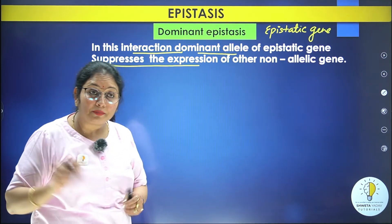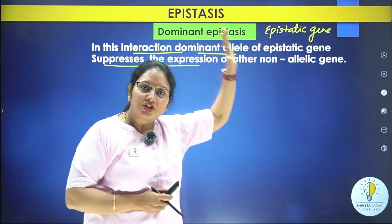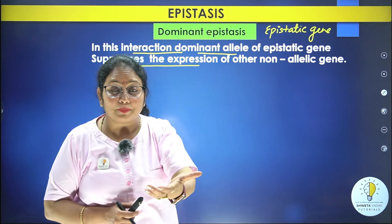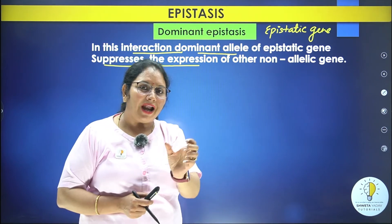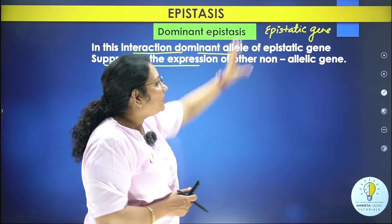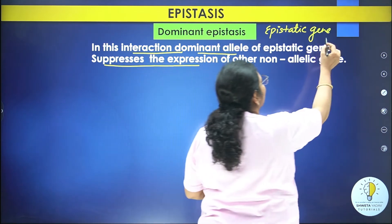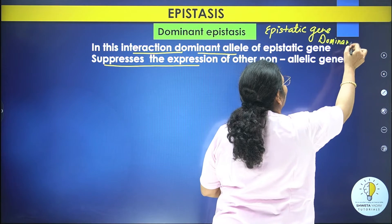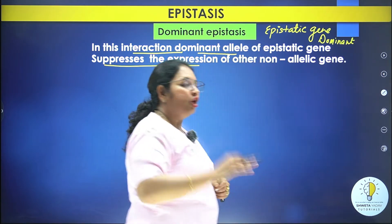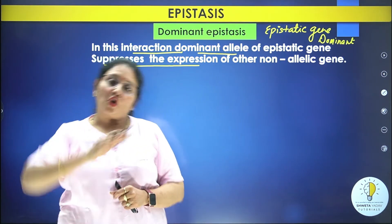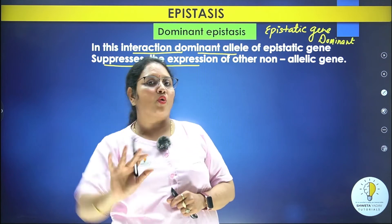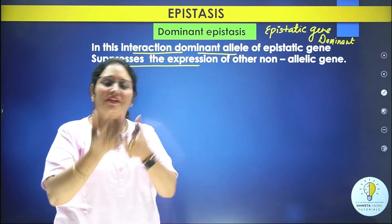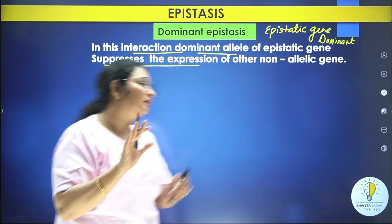Simply put, in dominant epistasis, the epistatic gene suppresses the expression of the other gene while present in its dominant form. The name 'dominant' itself tells us that the epistatic gene is of a dominant nature.